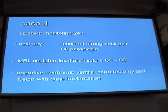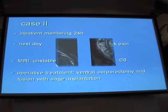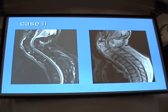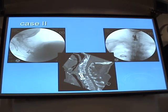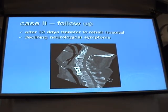The patient was monitored for 24 hours. During the morning, he reported strong pain in the cervical spine, and subsequently paraplegia was reported. MRI showed instability in this part of the cervical spine. Operative treatment was performed — a ventral approach with discectomy and stabilization with a cage. The patient was admitted to the rehabilitation hospital 12 days after the operation with declining neurological symptoms.